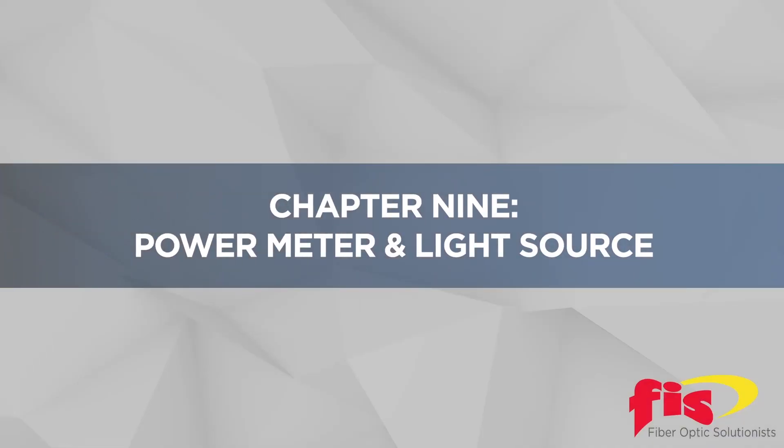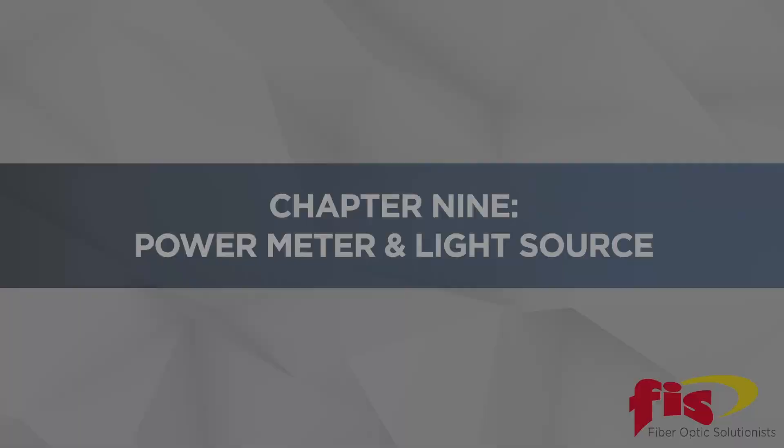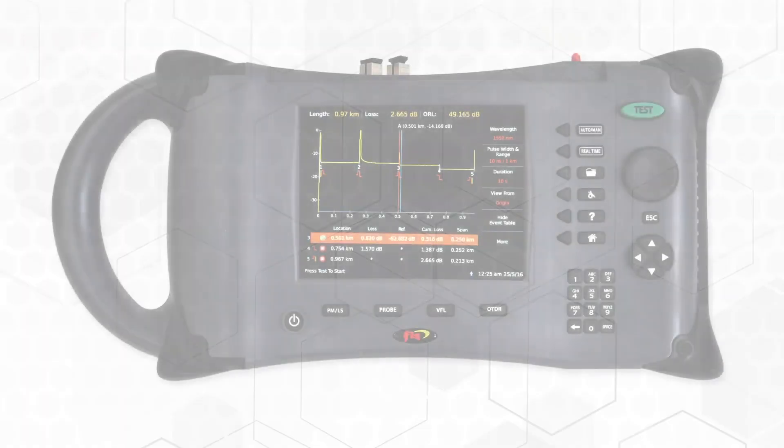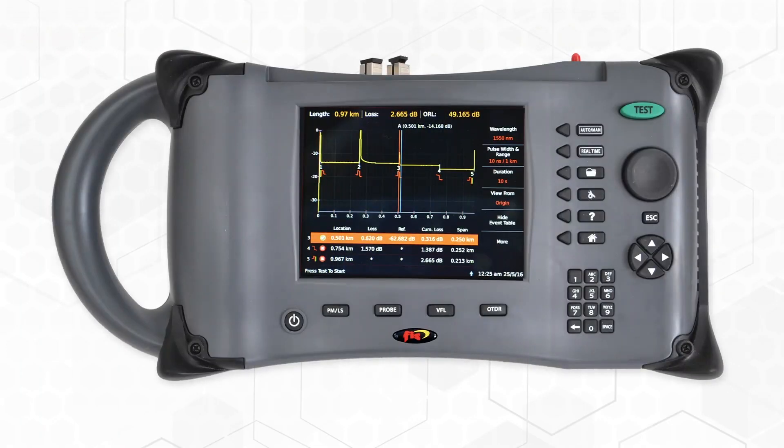Chapter 9: Power Meter and Light Source. In review, recall the OTDR provides the user with the particular locations of back reflections and attenuations, along with the length of fiber, which may identify a breakpoint or a macro bend.